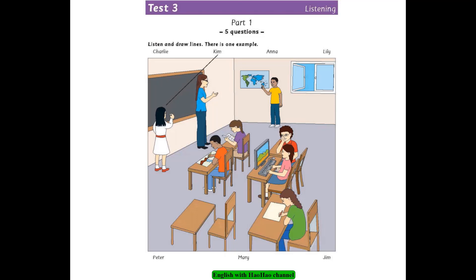3. Who are the girls who are on the computer? Are they on the internet? Yes, they're looking at a website. Well, the one with the red top is Lily. That's a nice name. Yes, it is. 4. And the girl next to her? The one who's wearing a pink t-shirt? Yes. That's her sister. Oh, what's her name? Her name's Mary.